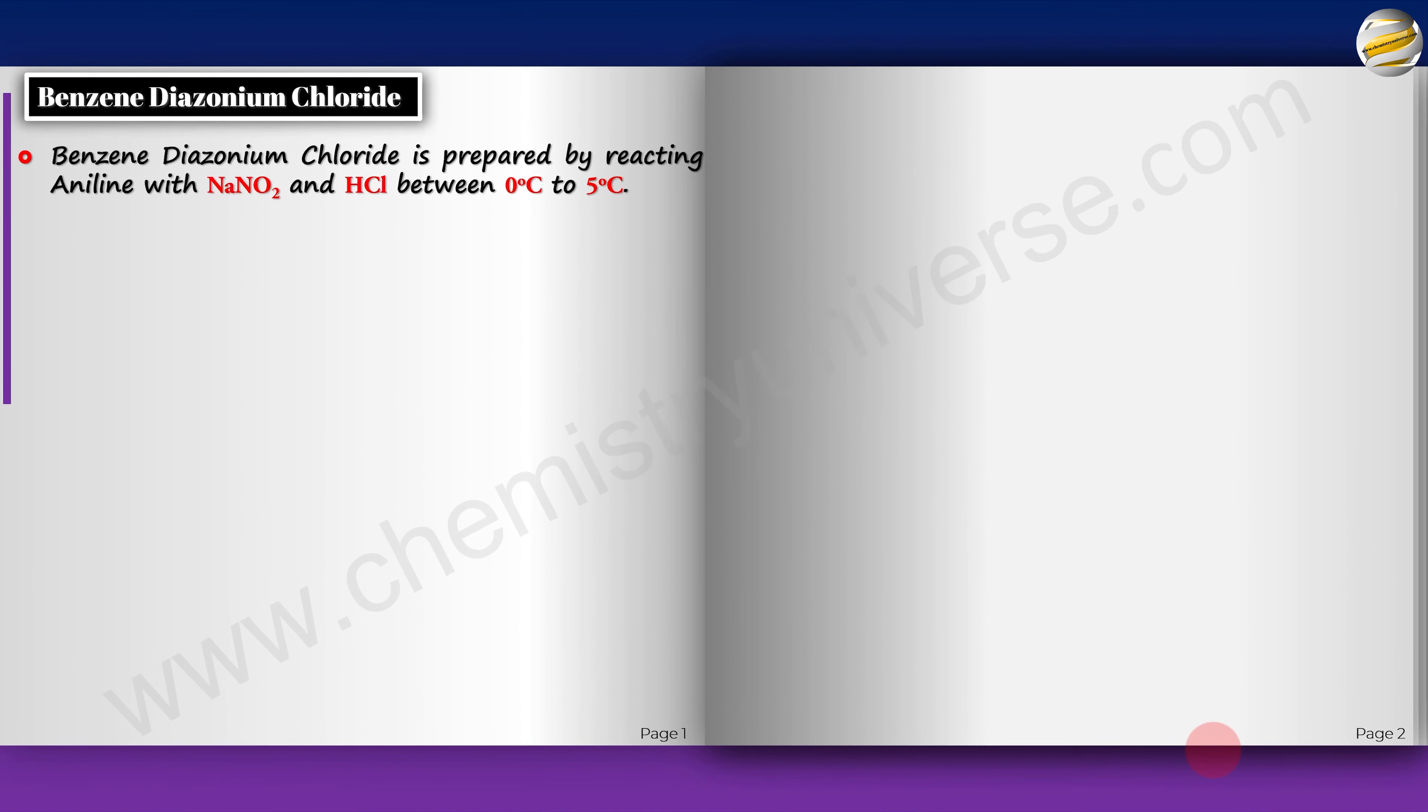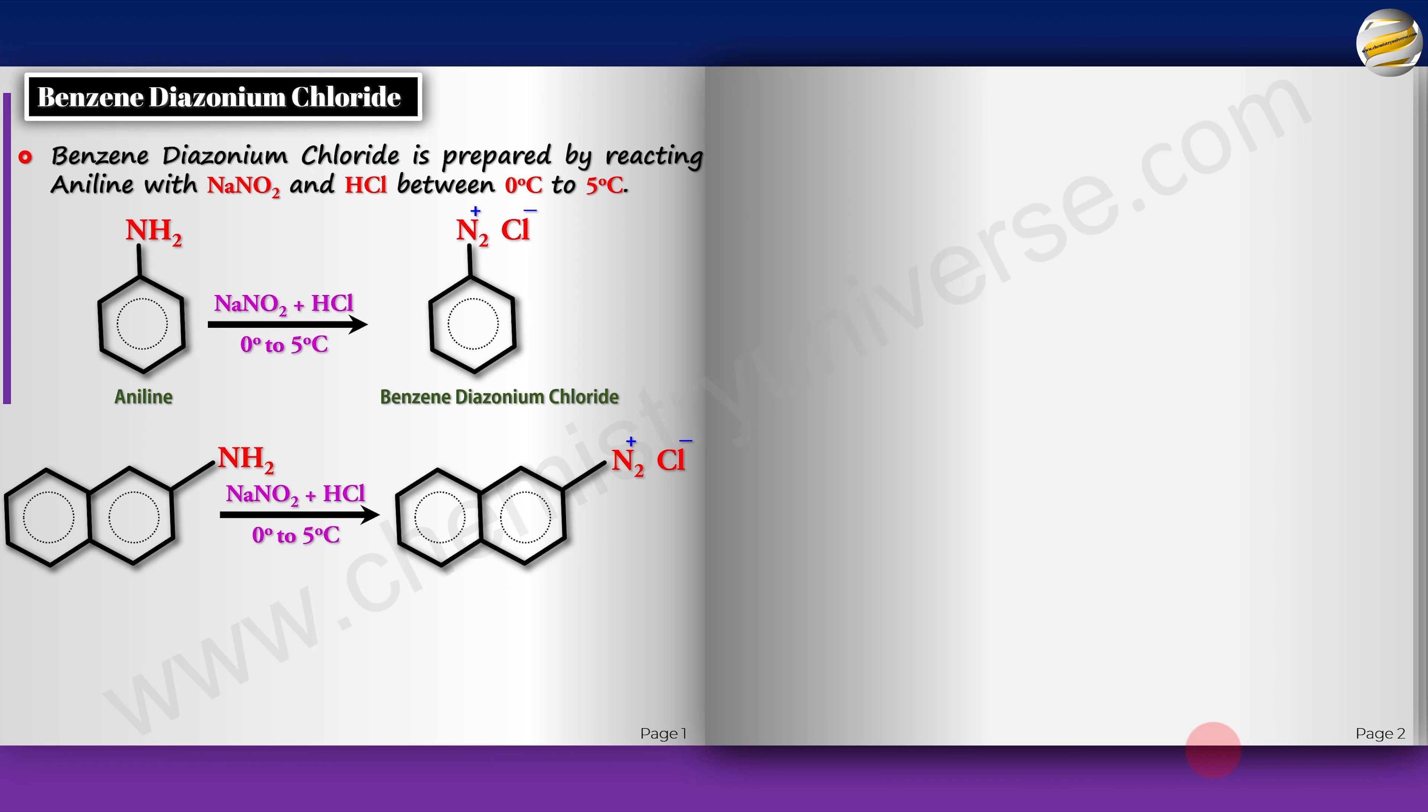For that we use NaNO2 and HCl. So ultimately the reaction is happening between HNO2 and aniline, but NaNO2 and HCl help create HNO2 in the first place. Similarly you can take the naphthalene version with NaNO2 and HCl, and you get the diazonium chloride. As I said, the function of NaNO2 and HCl is to generate HNO2, which otherwise is unstable and cannot be stored.